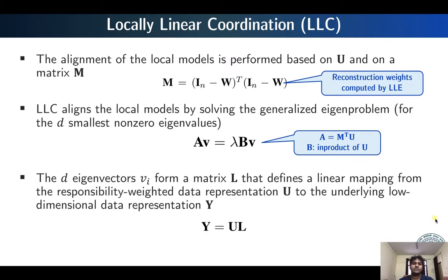A large number of dimension reduction methods have been reviewed, many of which have been applied to different types of single-cell datasets. Next we are going to look into specific dimension reduction methods proposed later, such as t-SNE and possibly UMAP, which are widely used nowadays for single-cell RNA sequencing data, mostly to visualize them in two dimensions. With that we end today, and in the next lecture we will look into t-SNE.